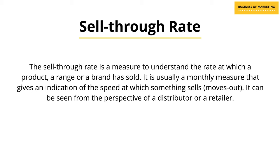So we've seen what sell in data is, what sell through data is, and what sell out data is. The next important measure is something known as sell through rate. The sell through rate is a measure to understand the rate at which a product, a range of products, or a brand has sold. It is usually a monthly measure that gives an indication of the speed at which something sells or moves out. It can be seen from the perspective of a distributor or a retailer — essentially, how quickly is the product coming in versus how quickly it is moving out.